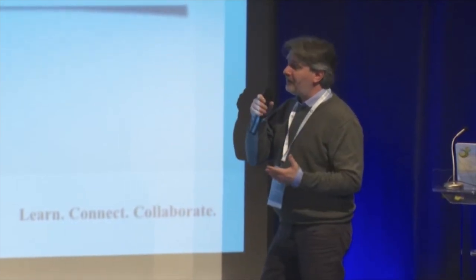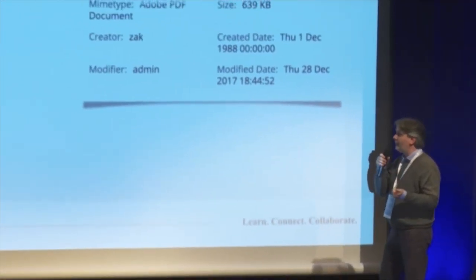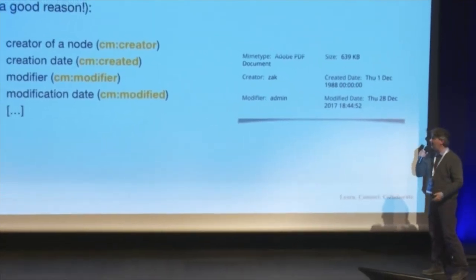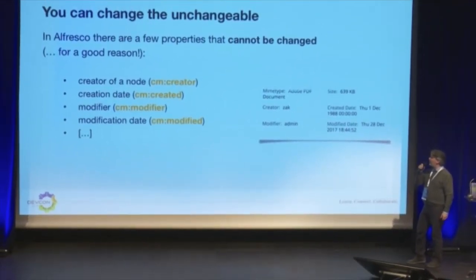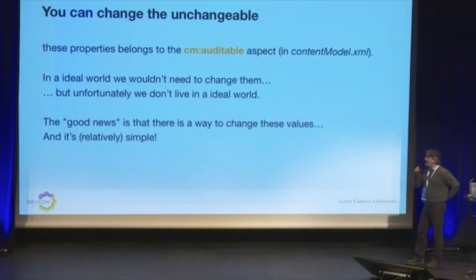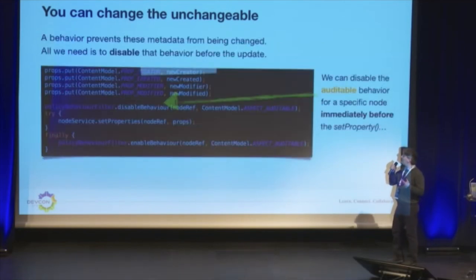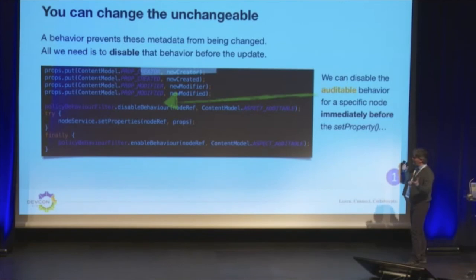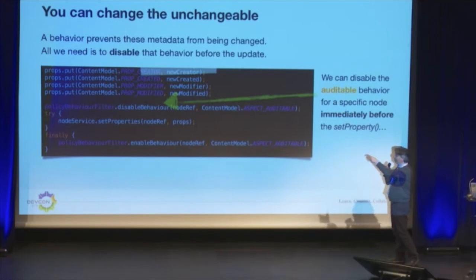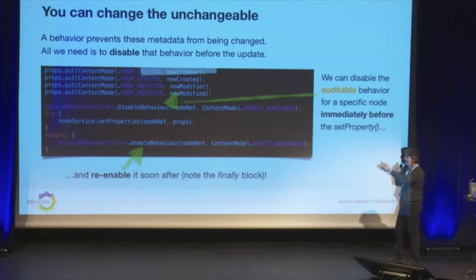In Alfresco, there are a few properties that cannot be changed for good reason: the creator, the creation date, the modifier, modification date, and others. These properties belong to the auditable aspect. In an ideal world we wouldn't need to change them, but we don't live in an ideal world, so it happens. A behavior prevents this metadata from being changed. All we need is to disable this behavior before the update and then re-enable it soon after. With the policy behavior filter, we disable the behavior, set the properties with the updated values, and re-enable the behavior in the final block.